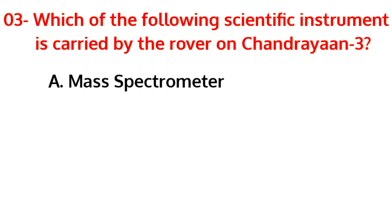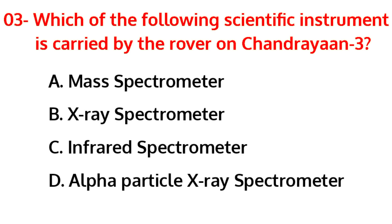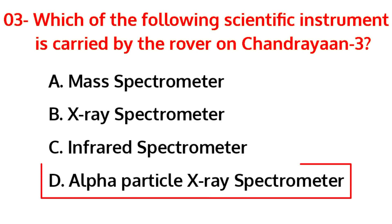Which of the following scientific instruments is carried by the rover on Chandrayaan-3? The correct answer is option D, Alpha Particle X-ray Spectrometer.